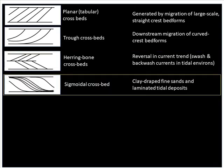Another expression is in the form of sigmoidal crossbeds. These take the form of a very lazy or weak S. They form in similar tidal deposits, but typically you find them clay-draped, with fine sands and laminated deposits. Also typical, as mentioned, in tidal settings.